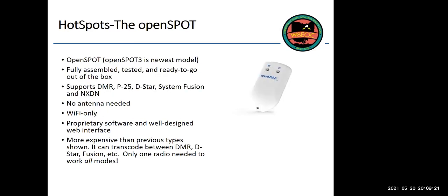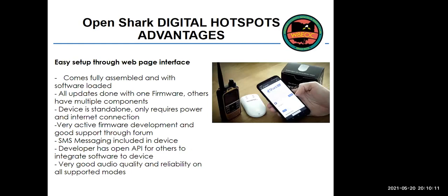The Open Spot — latest model is the Open Spot 3, available for just a few months now. It supports all the open modes. My partners use this — it's made to slip in your pocket. You can tether it to your cell phone, carry your Fusion or DMR handheld, and work the world on the fly. Remarkably, only one of these is required to work all the different modes without changing any software setup.